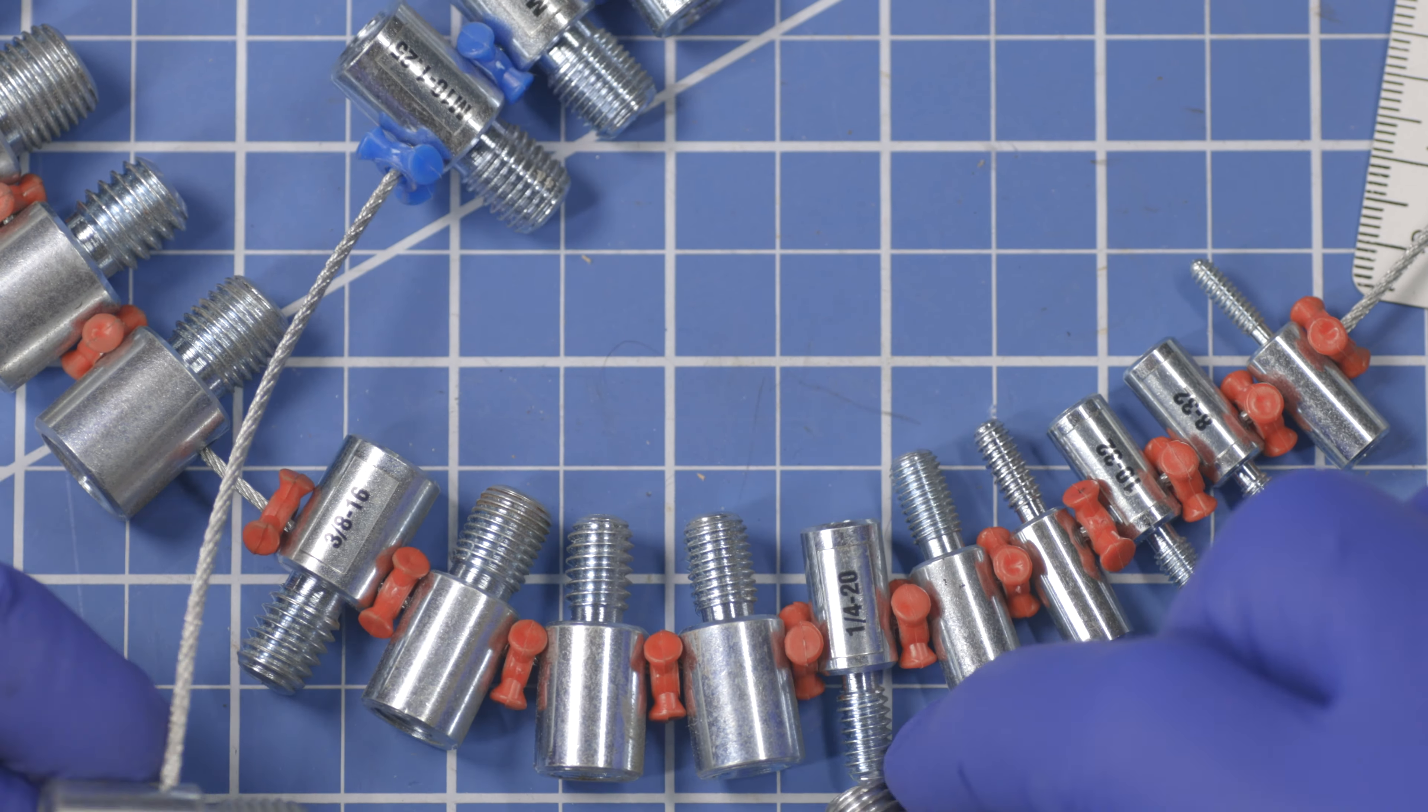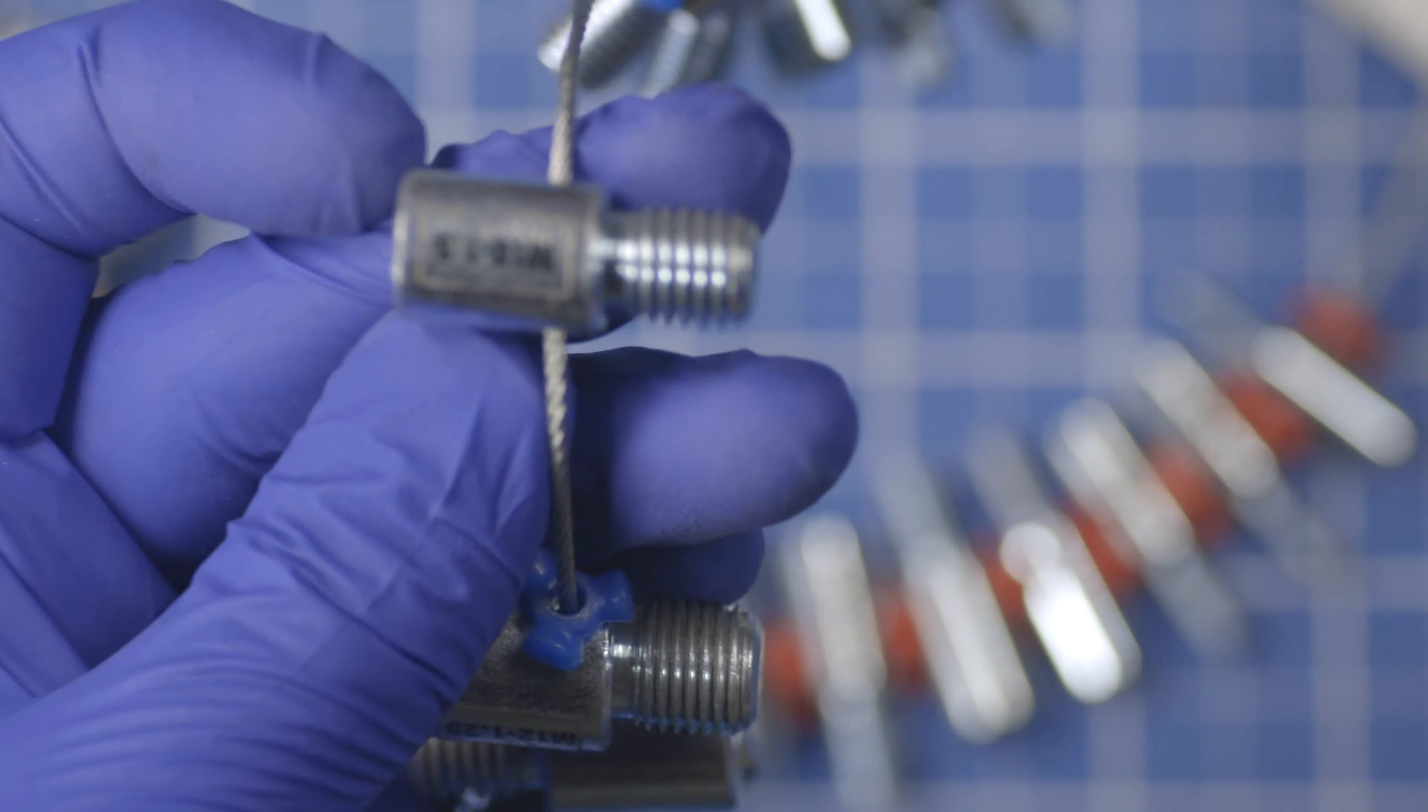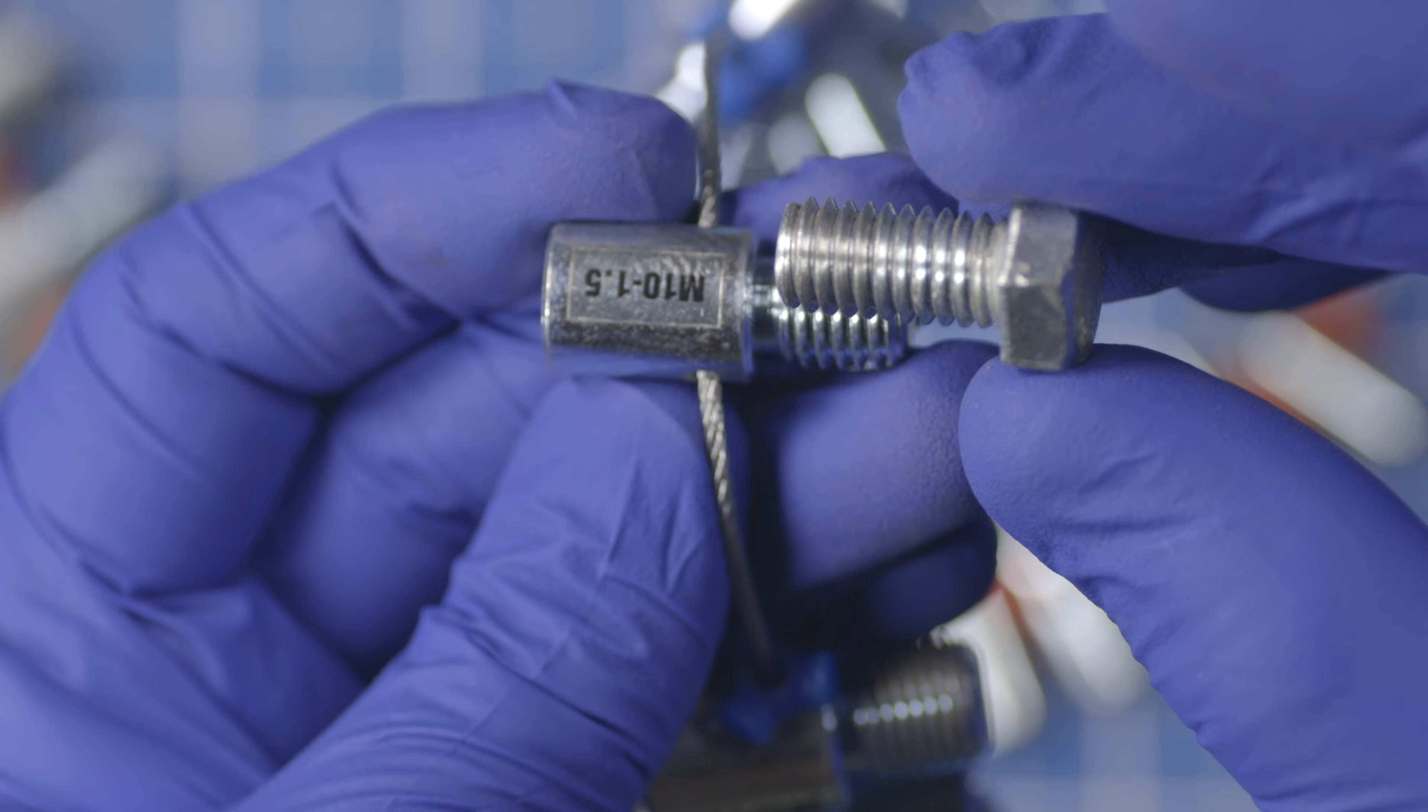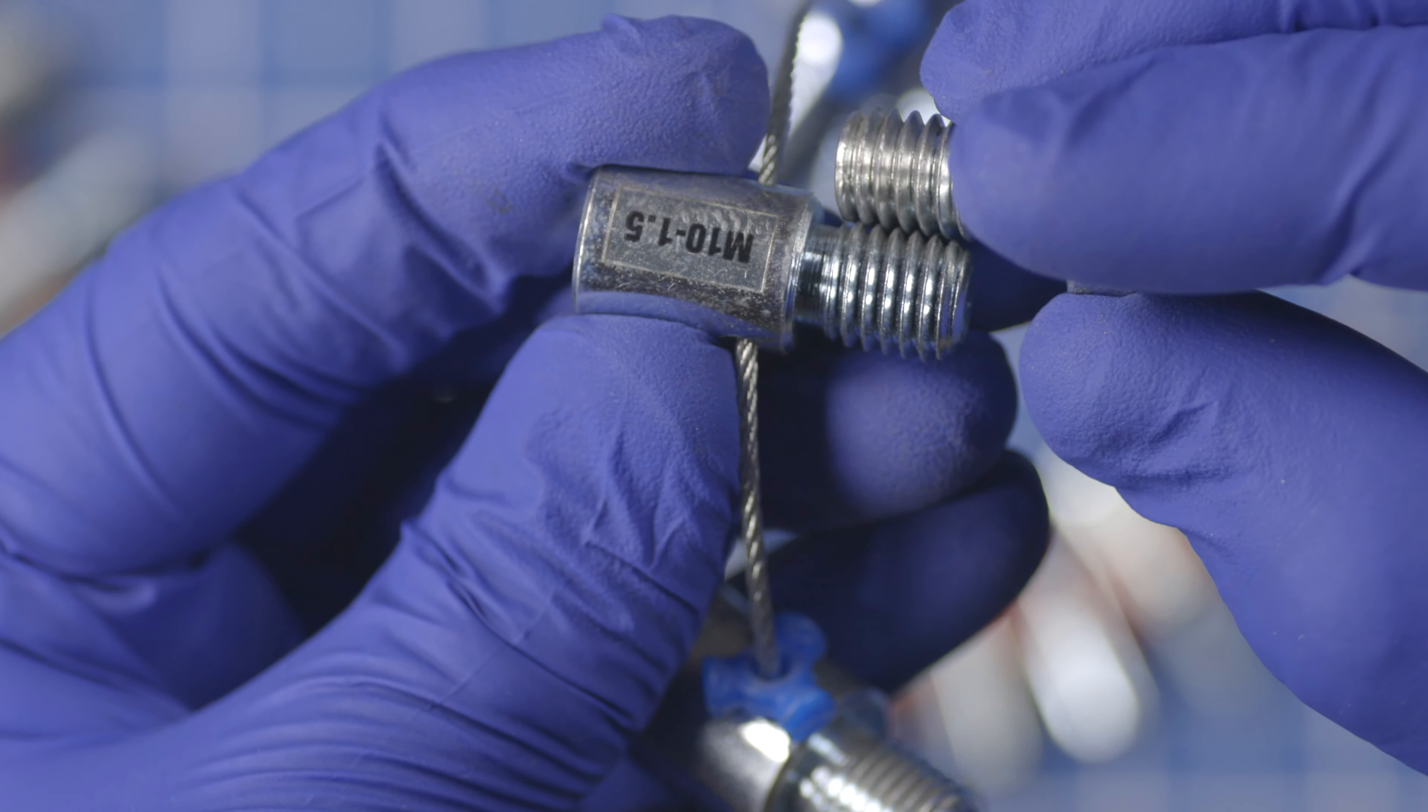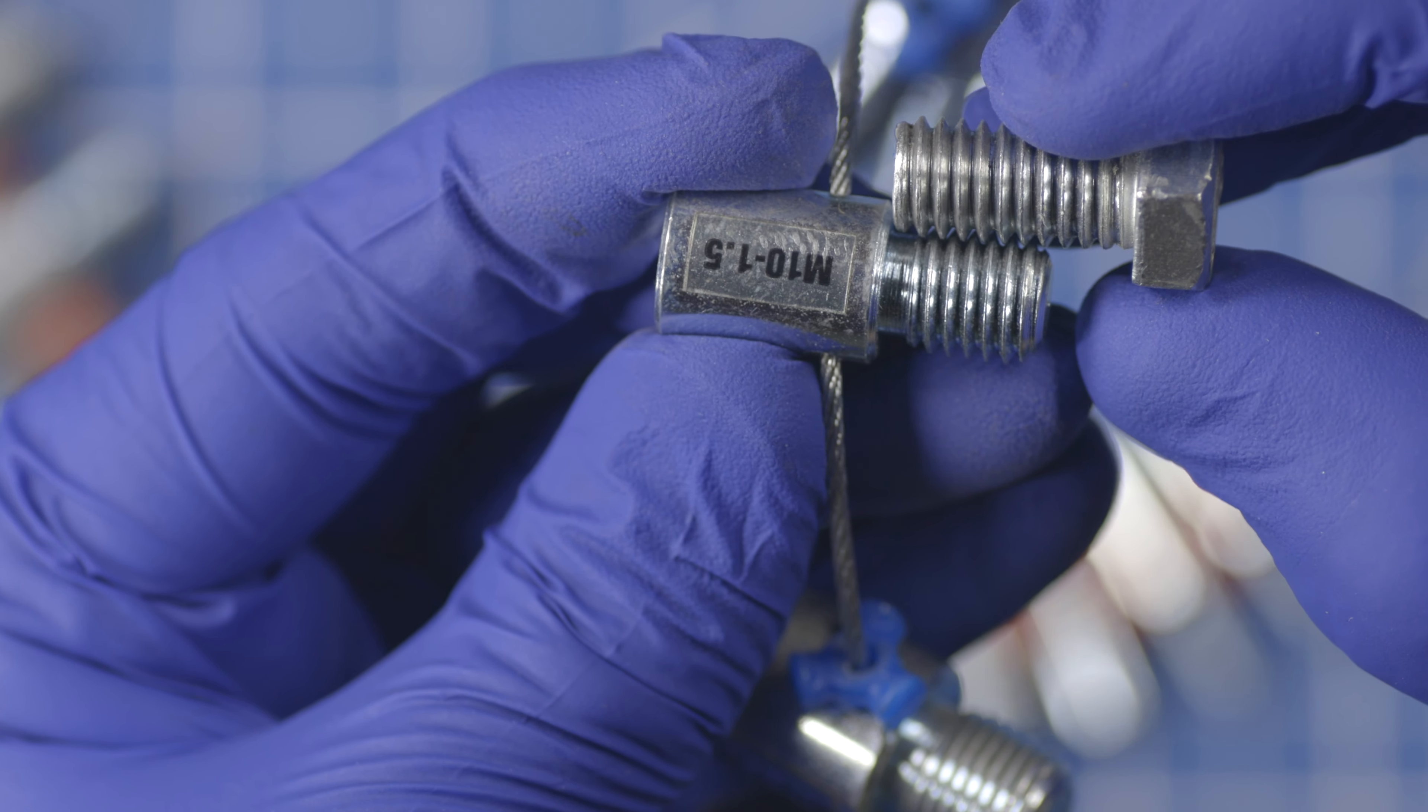All right. So, as you can see, this is an M10-1.5, and this is our earlier established 3/8 by 16. And as you can see, these threads almost mesh up, but don't actually mesh up.